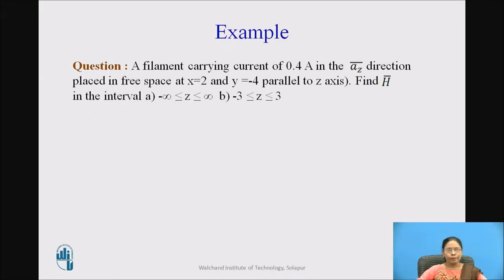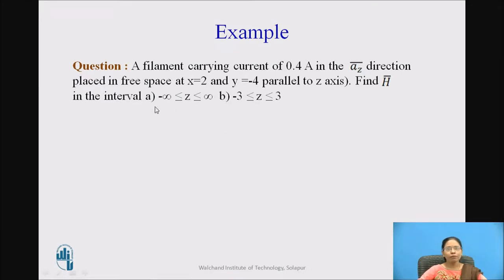Now let us consider the example. A filament carrying current of 0.4 amperes in the A_Z bar direction is placed in free space at X equals 2 and Y equals minus 4, parallel to the Z axis. Find H bar: part A for Z between minus infinity to plus infinity, and part B for Z between minus 3 to plus 3. When Z ranges from minus infinity to plus infinity, this is an infinite length filament; part B is a finite length filament.